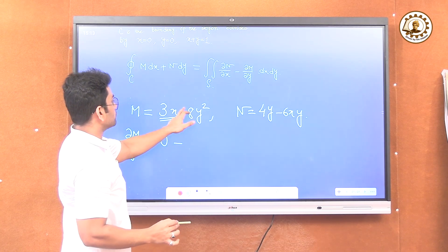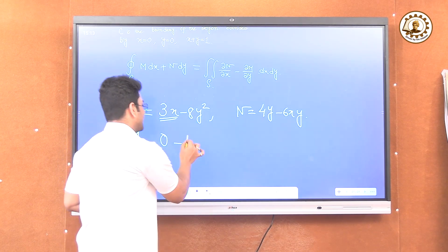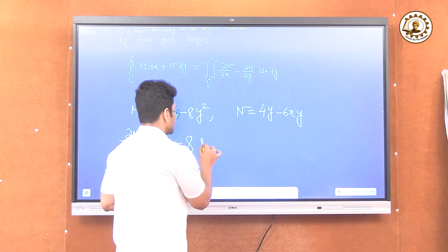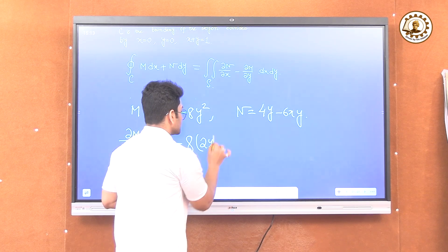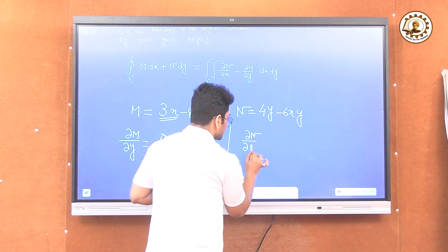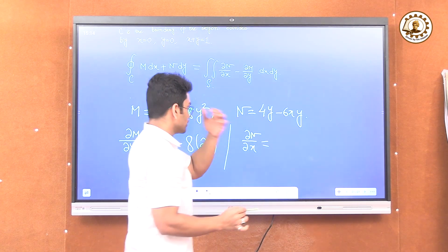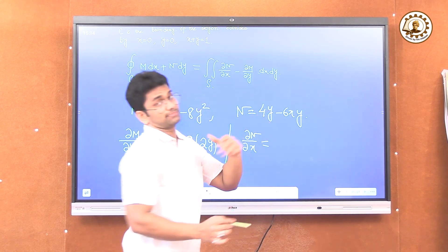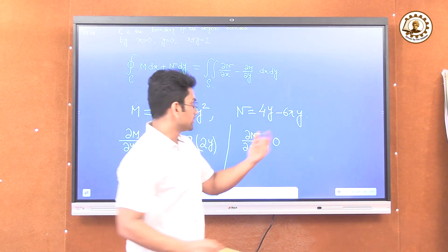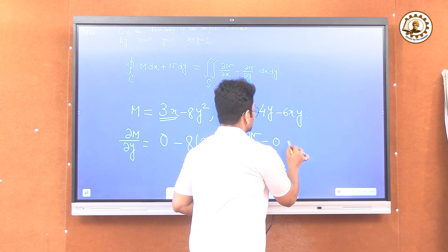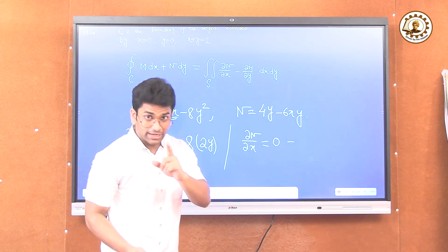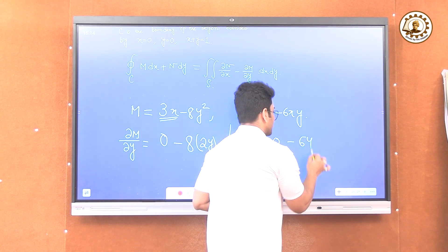Minus the partial derivative of minus 8y squared: minus 8 is treated as constant and the derivative of y squared is 2y, giving minus 16y. Now del N / del x: the derivative of 4y with respect to x is 0 because 4y is treated as constant. And the derivative of minus 6xy with respect to x gives minus 6y.